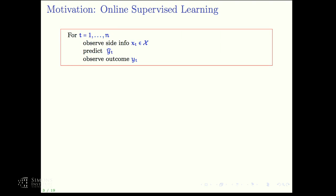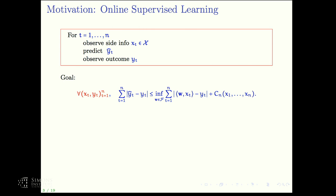Let me provide the motivation for this problem. The motivation is online supervised learning. We have a very generic prediction task that lasts for N rounds. At each round T, we observe some side information X_T — think of this as a vector or a matrix. We make a real-valued prediction Ŷ_T, and then we observe the outcome Y_T. What we would like is to have a small number of errors accumulated over N rounds, measured by the following regret inequality.